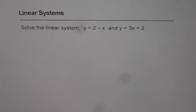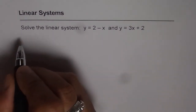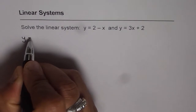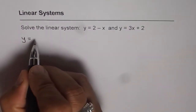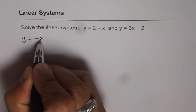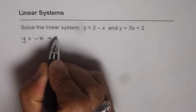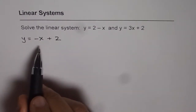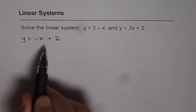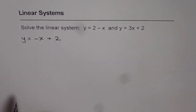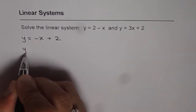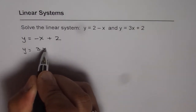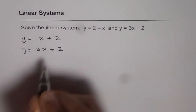Whenever you are given a linear system, first you should analyze it. We have two equations which form the linear system. The first is y equals 2 minus x — let me write it in proper order: y equals minus x plus 2. Always write in y equals mx plus b form. The second equation is y equals 3x plus 2.